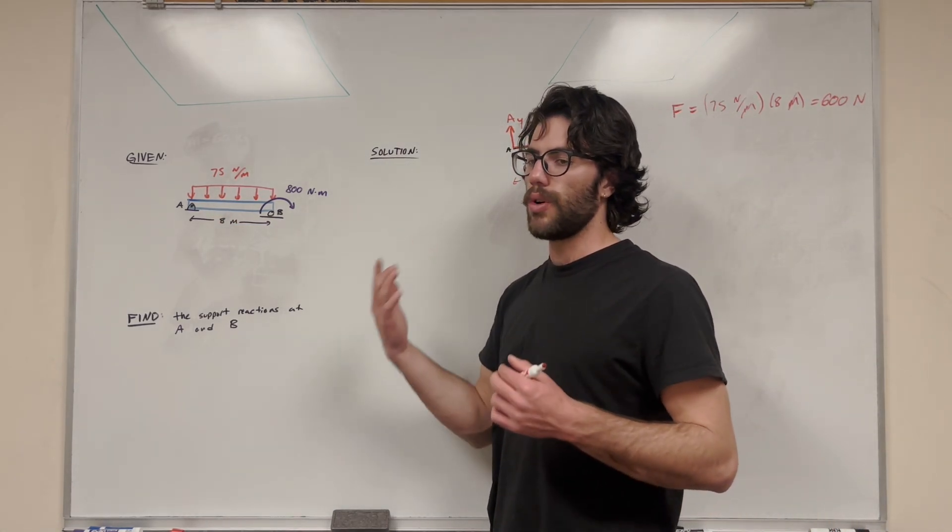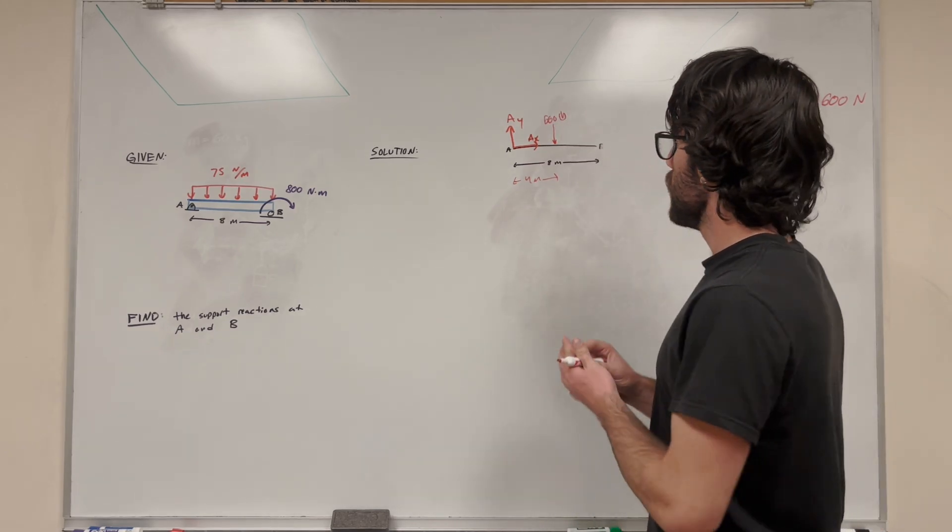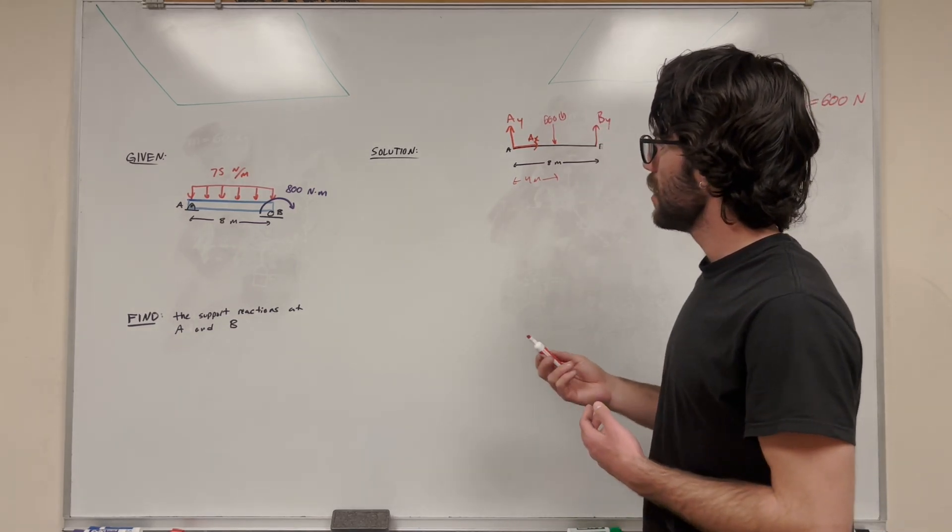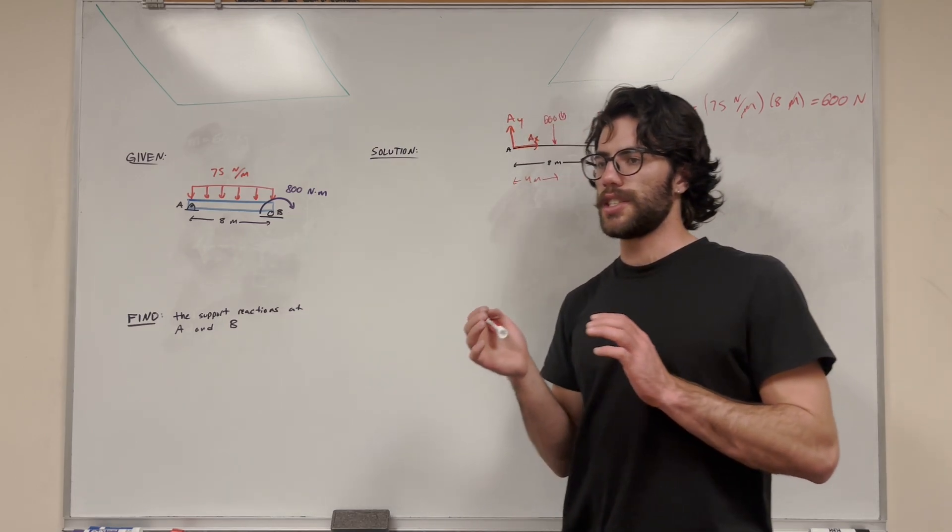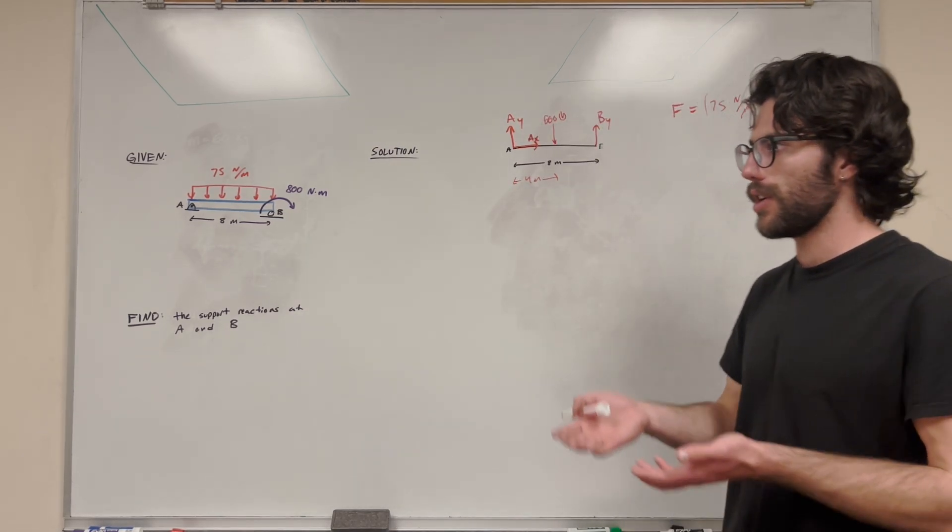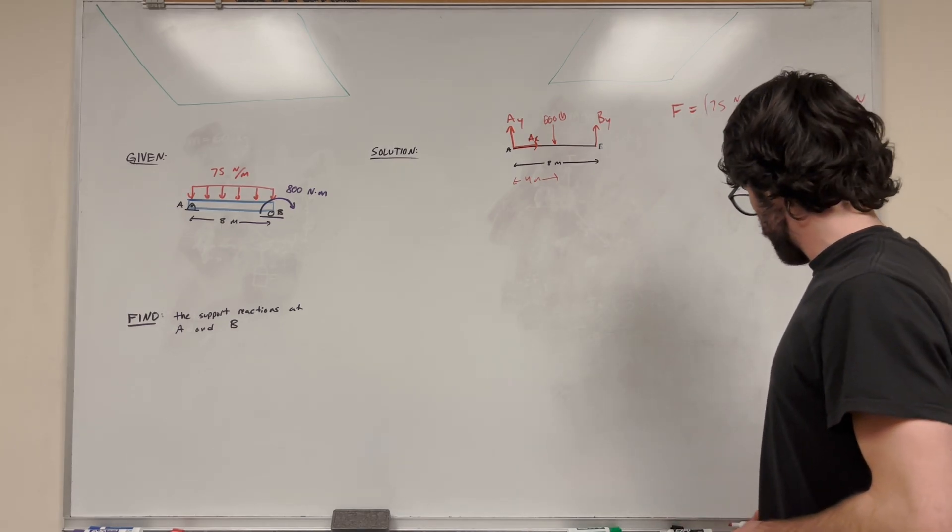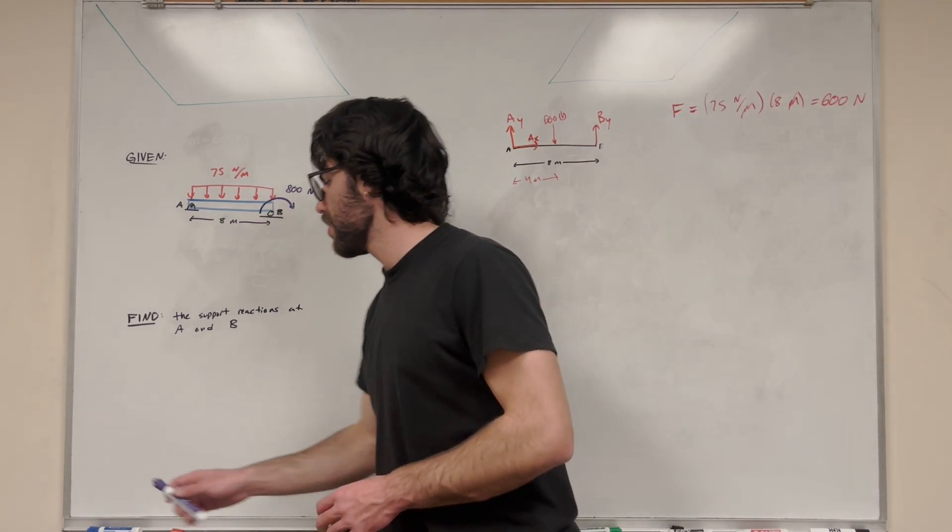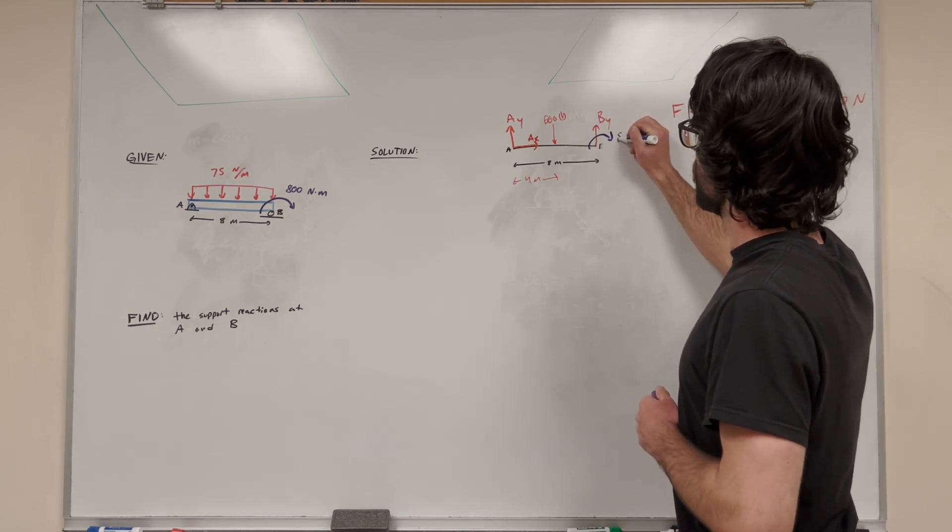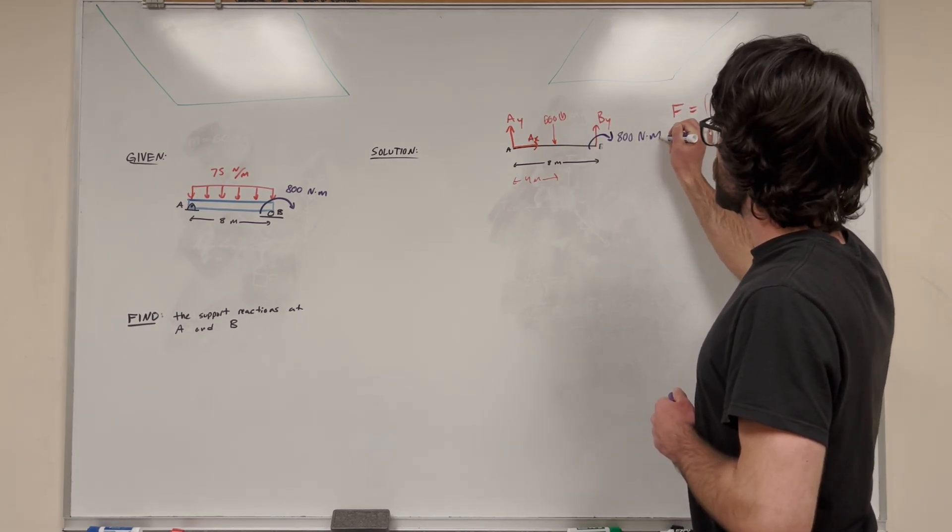But B is a roller. And a roller only has one support reaction. It has a Y reaction. So this is going to be B_y. The reason the roller doesn't have an X direction is because you can imagine you could push that beam over it and it would not stop it in the X direction, but it would keep it up from the ground. So there we go. And let's draw our moment. The 800 newton meter moment that's being applied to the beam.